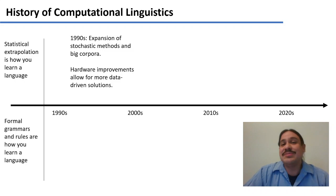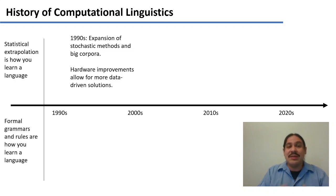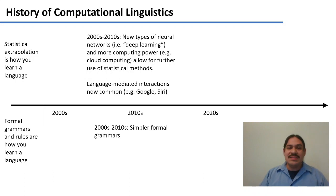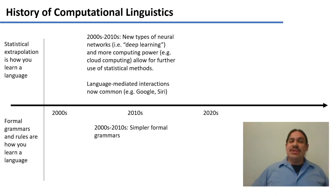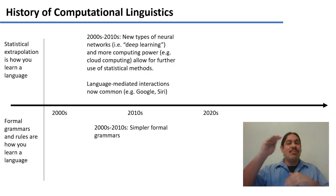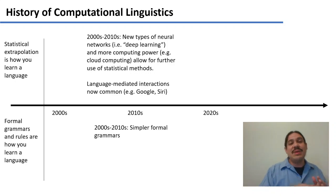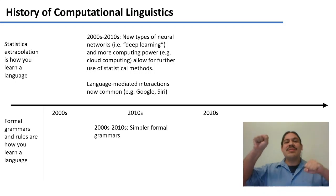In the 1990s, two things happened. First, hardware improved enough that you could now reliably run neural networks and other learning algorithms on a home computer. Also, enough corpora were accumulated so that you could find patterns in large collections of text. In the 2000s and 2010s, people invented new architectures for neural networks — with more hidden layers, more input neurons, and more interrelationships between neurons. We call these kinds of networks deep learning. These new architectures, combined with more computing power, have allowed for furthering methods that find numerical correlations between data.